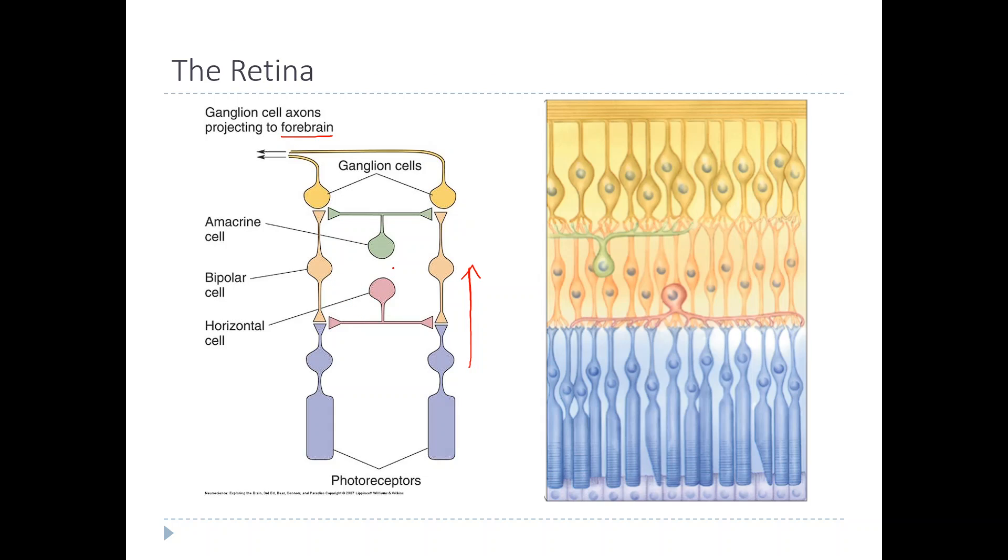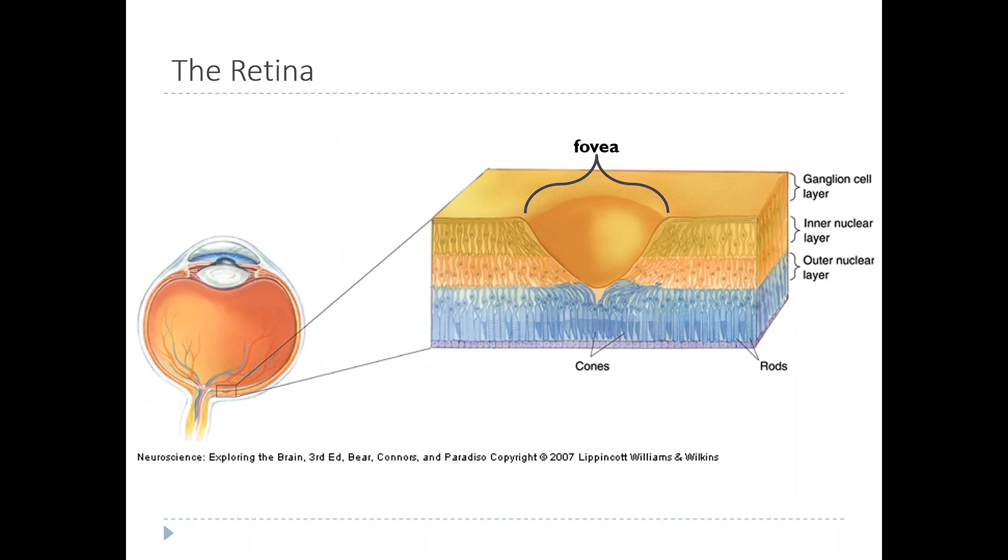The retina is more or less uniform except for some important spots. The fovea is right at the center of the visual field, and it turns out that the fovea actually forms a little divot. The purpose of this divot is probably to allow light to pass directly to the photoreceptors at the fovea without having to pass through the other layers.